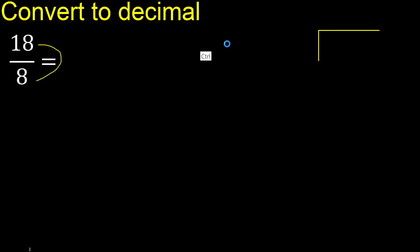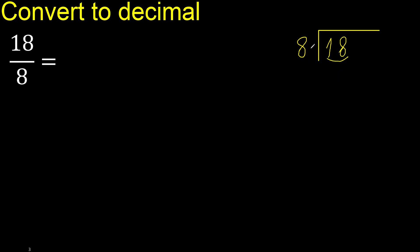18 divided by 8. 1 is less, therefore next. 8: 18 is not less, therefore with 18 — 8 multiplied by which number is nearest to 18?